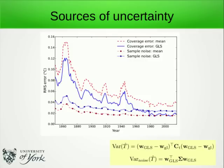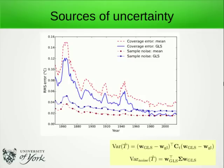We can also use this analysis to look at sources of uncertainty. The distinction between sample bias — due to an unrepresentative sample — and sample noise — due to the sample being too small — can be evaluated analytically. The dashed lines represent the cosine-weighted mean: the top line is the error due to coverage, and the bottom line is the error due to small sample size. Using the generalized least squares average, we adjust the weights to reduce the coverage error at a cost of increasing sample noise. However, given that coverage error dominates the uncertainty, this gives us a net win in terms of overall uncertainty.